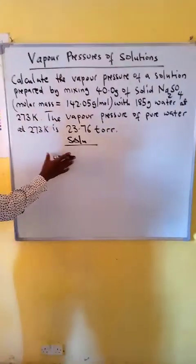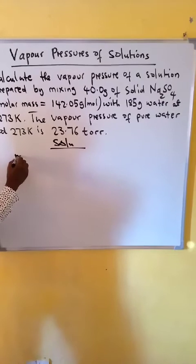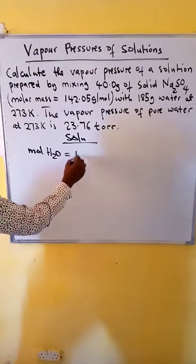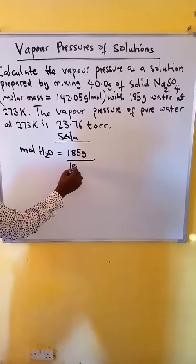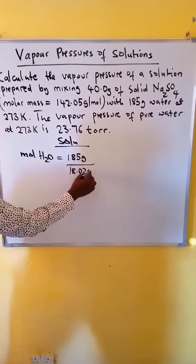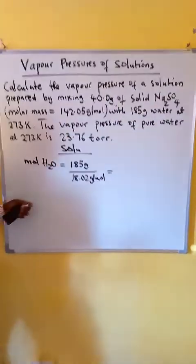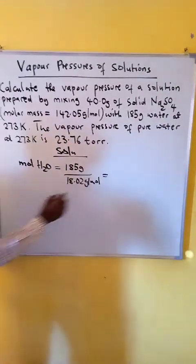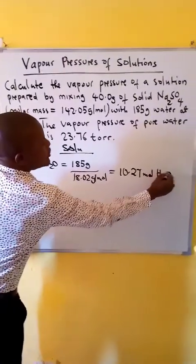First we need to calculate the moles of water. The grams of water given is 185 grams, with a molar mass of 18.02 grams per mole, which when we do the calculation will give us 10.27 moles of water.